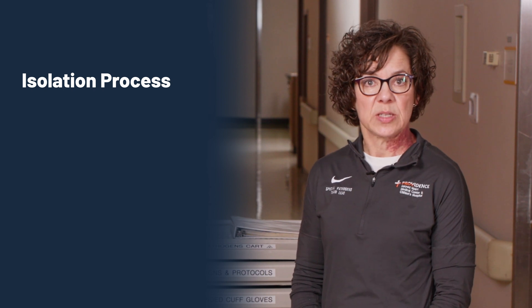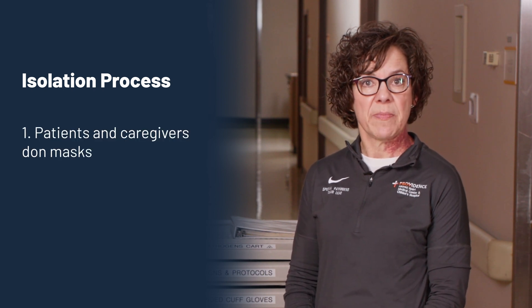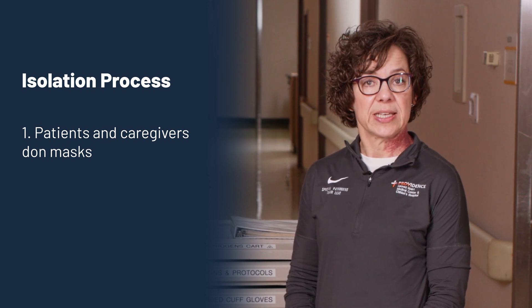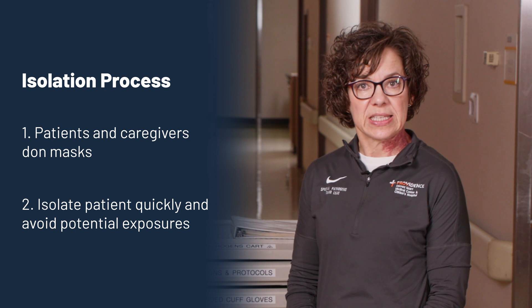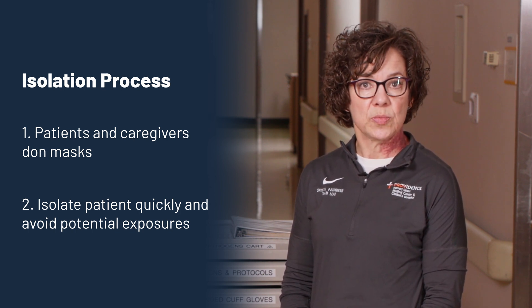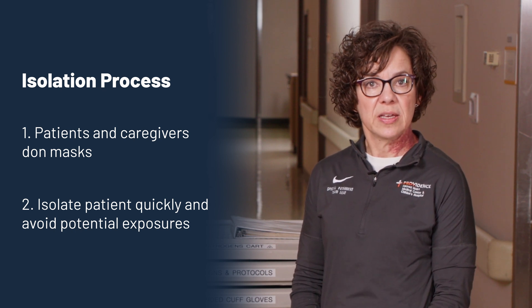The isolation process begins by first having the patient don a mask, and then you and any other caregivers at the triage desk donning masks yourselves. The second step is to isolate the patient quickly and avoid the waiting room to prevent potential exposures to others. If possible, coordinate with the charge nurse to place them immediately in the designated isolation room in the special pathogens plan. If it is not available, they should be placed in the triage room identified for isolation until the designated isolation room is available.